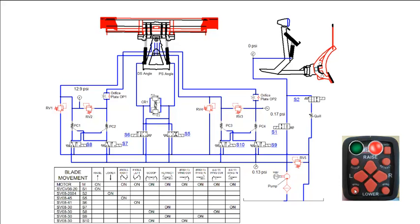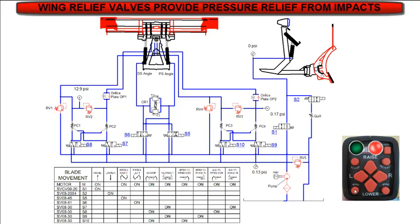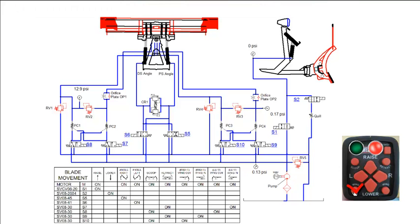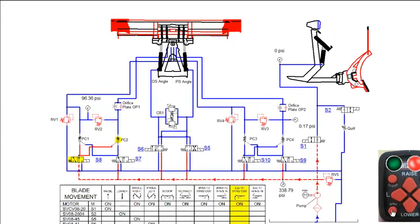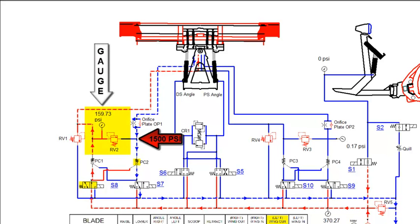In this example, we will show how the wing relief valve functions on a wide out plow. The main pump relief valve setting is 2250 psi and the RB2 left wing relief valve is 1500 psi. The wing reliefs are designed to protect the extend circuit only. We begin by pushing the left wing button on the plow control. Fluid from the pump flows through the shifted S8 cartridge and extends the left wing cylinder. When the cylinder is fully extended, the pressure will build to the RB2 relief valve setting and bypass directly to tank.